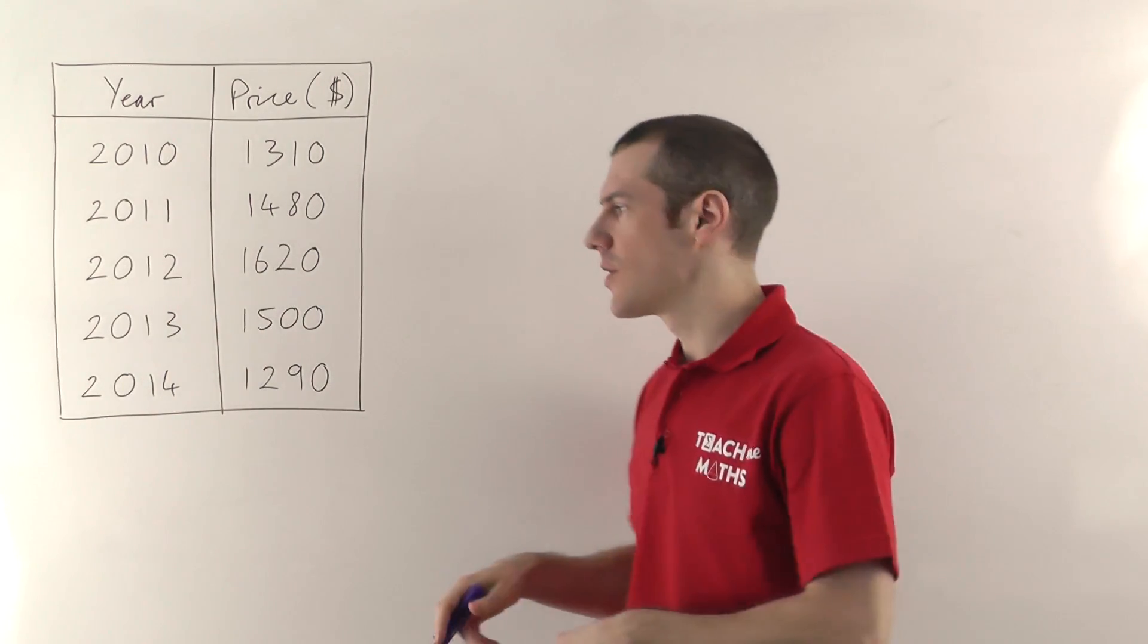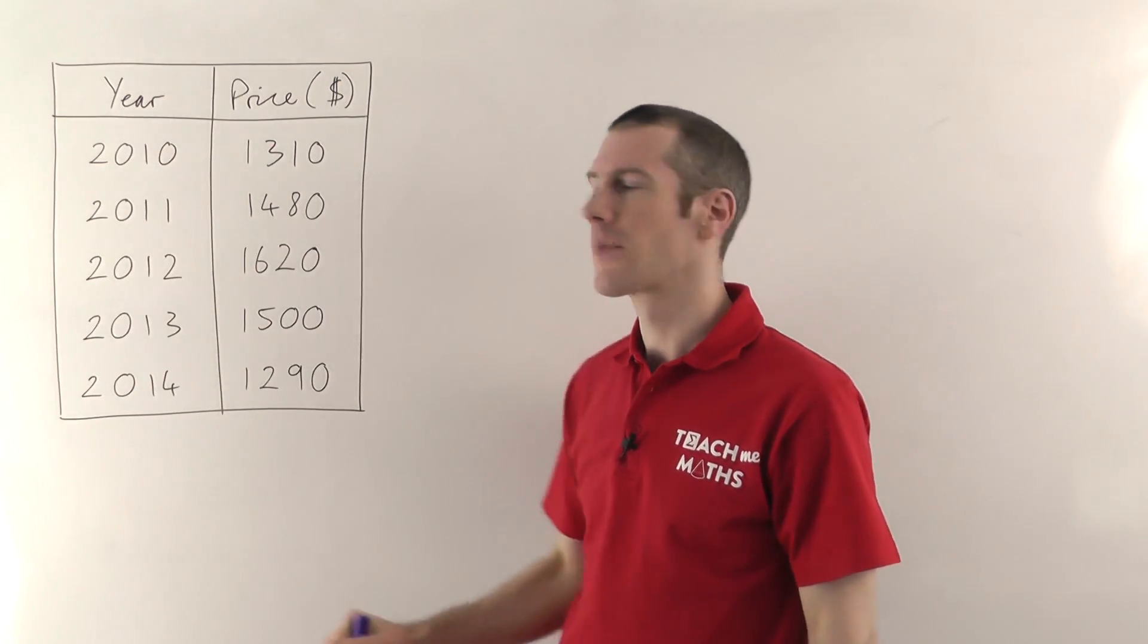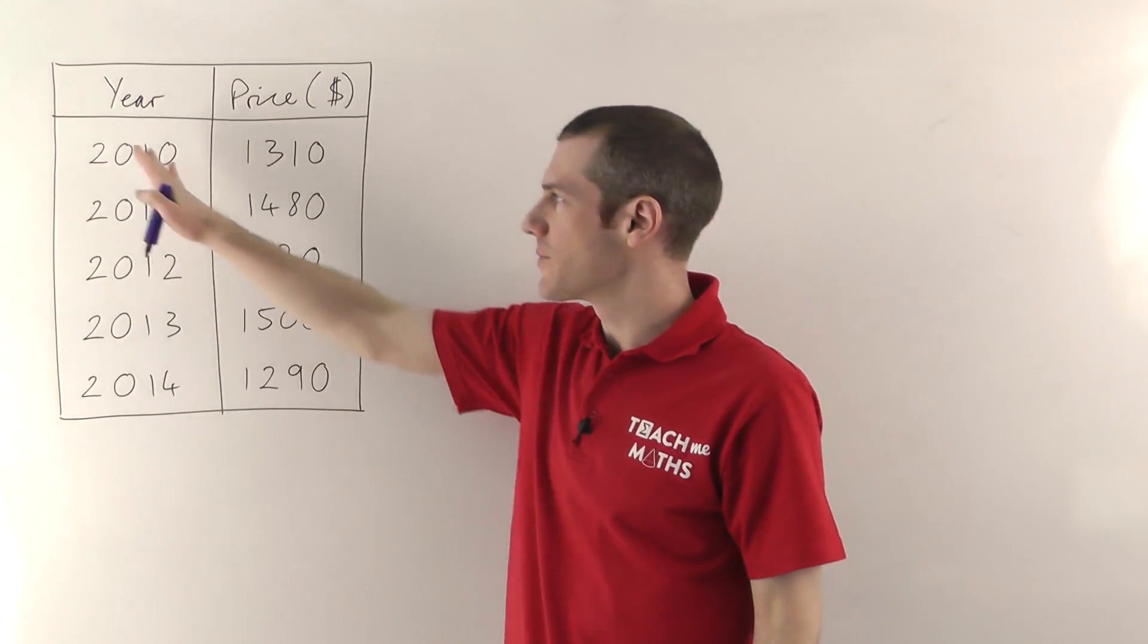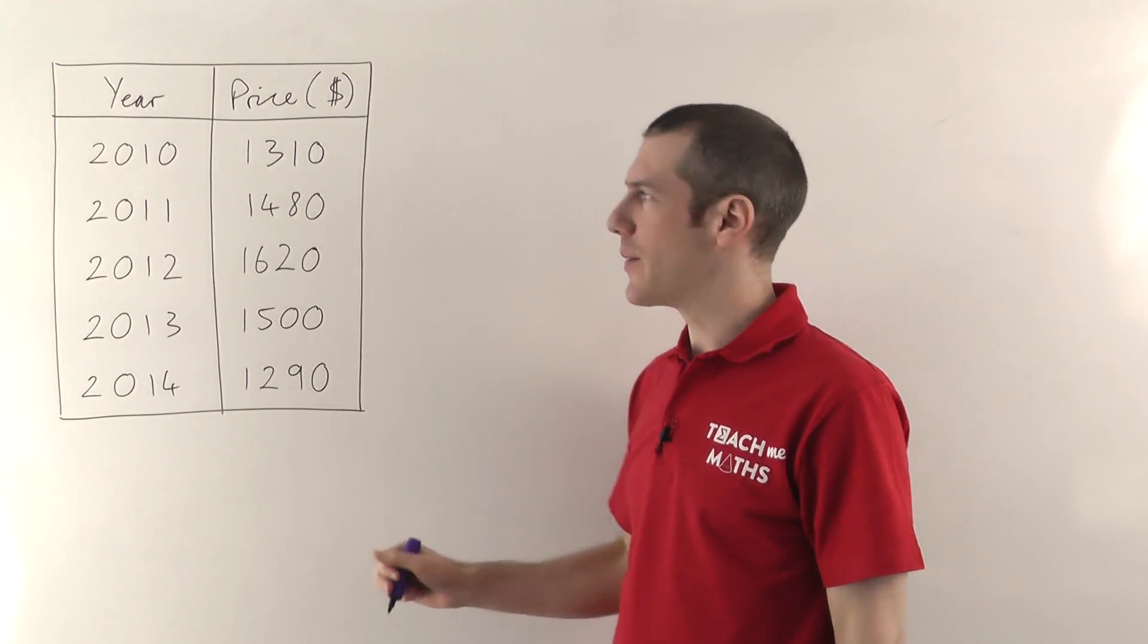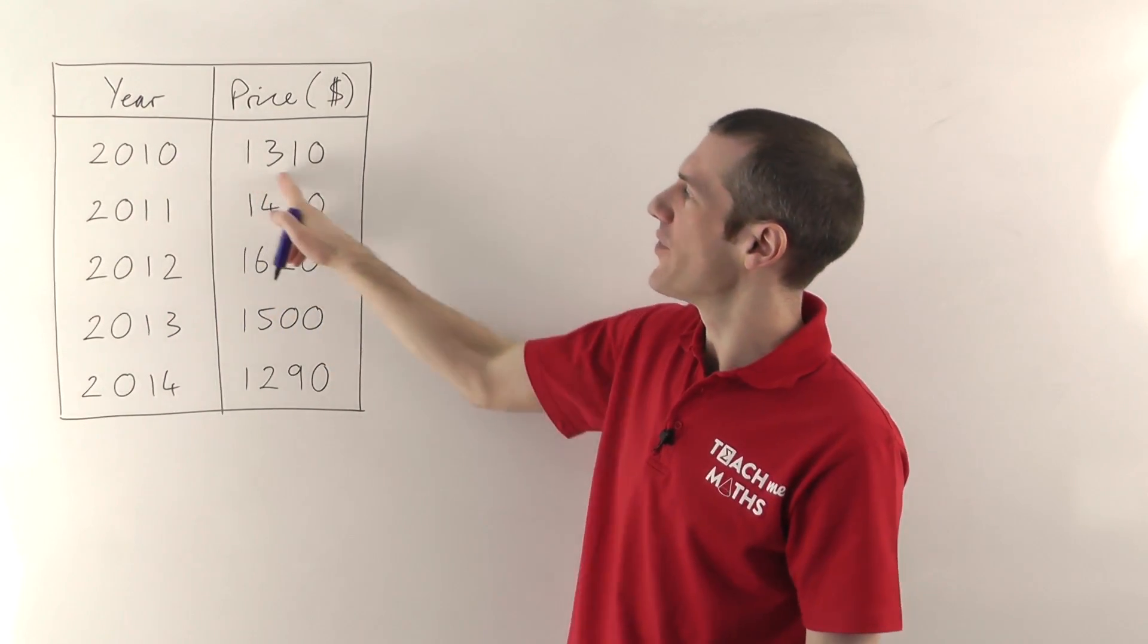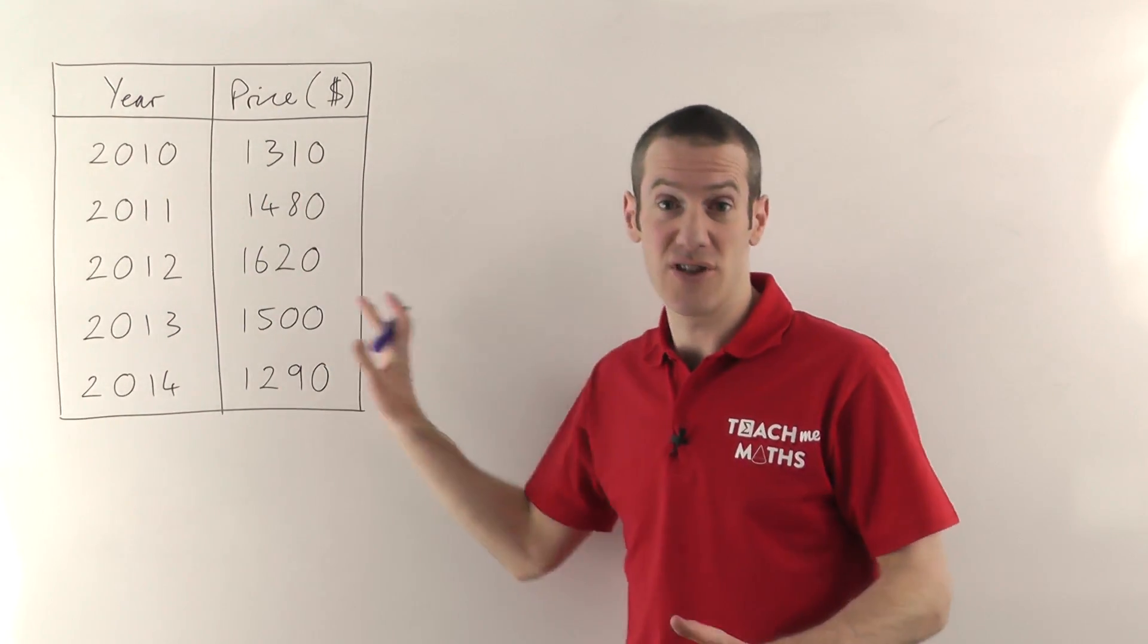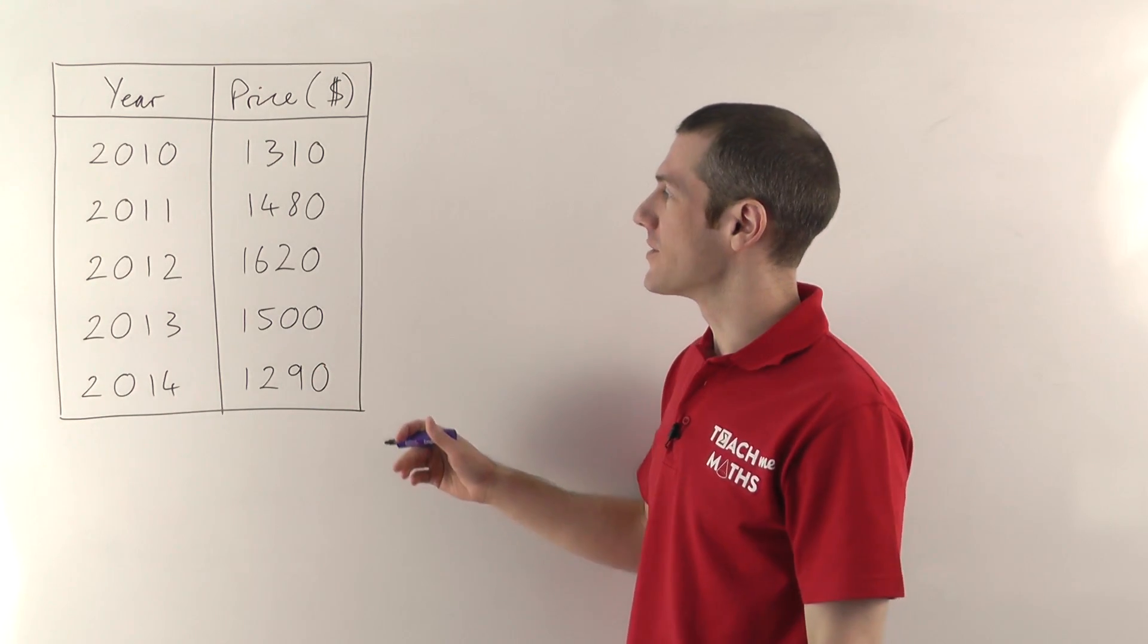Line graphs are very well suited to show progression, particularly over a period of time. So that's why I've chosen something that varies over time. Now these aren't particularly accurate. I've sort of guessed a bit, but we're imagining the gold price in 2010 on average was $1,310. These are in US dollars. Gold is usually measured in dollars like that.